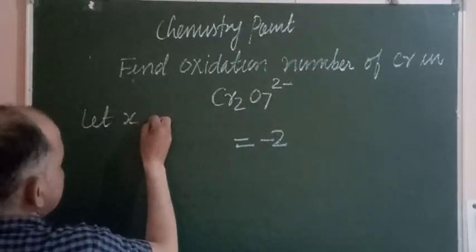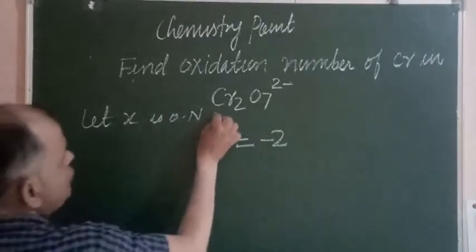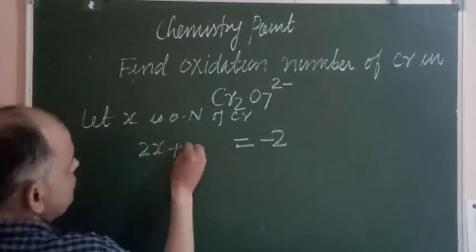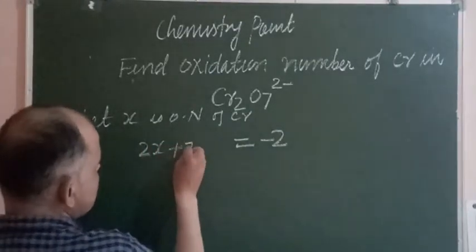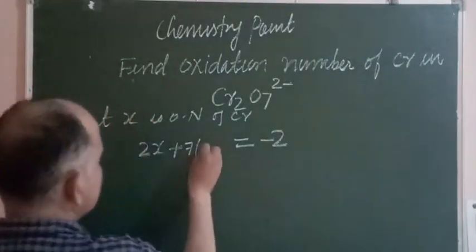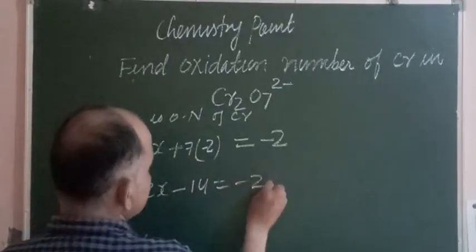So 2x plus, this is 7, and oxygen has -2 oxidation number, so we put -2. So 2x, this is 14, minus 14. 2x is equal to, then -14 moves to the right so it becomes positive and we got 12.